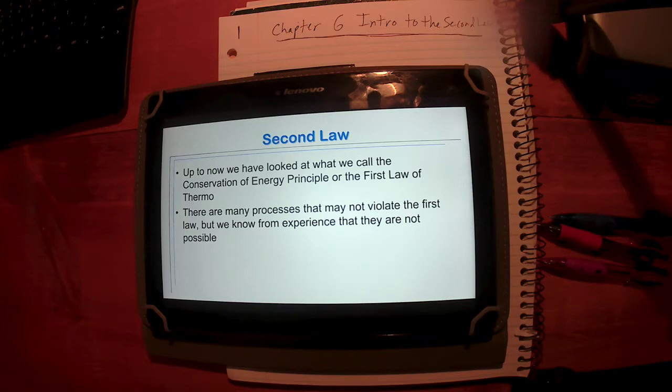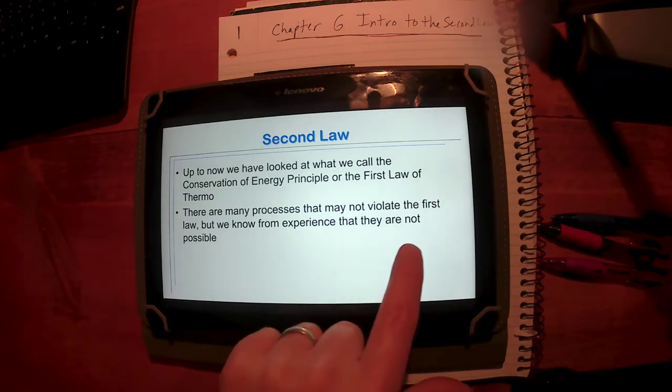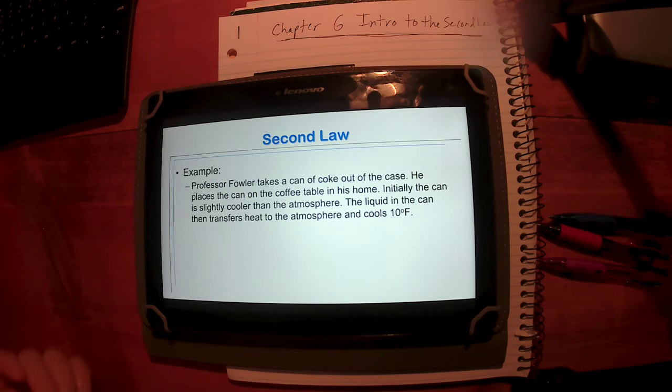If we think about first law, conservation of energy principle, and we say up to this point that's really what we looked at. But there are many processes that we could suggest that don't actually exist, processes that are going to violate the second law. We could propose situations where it's possible according to conservation of energy but we know it's not going to happen, at least not spontaneously.